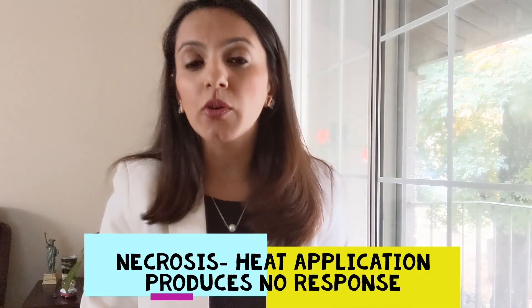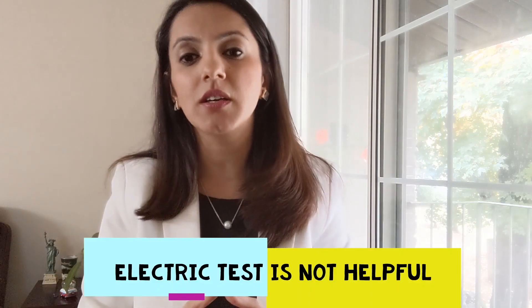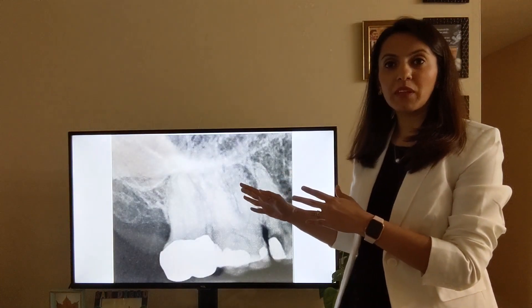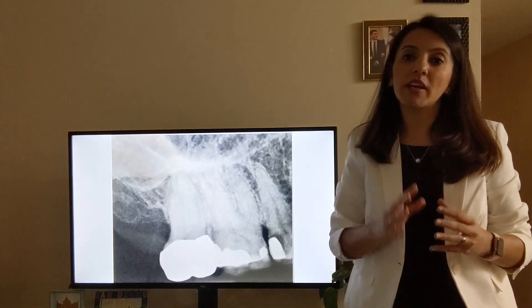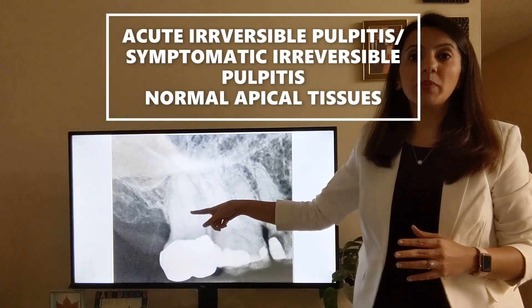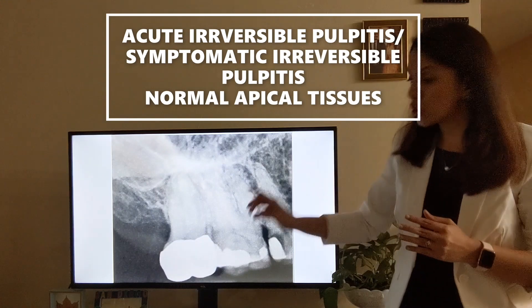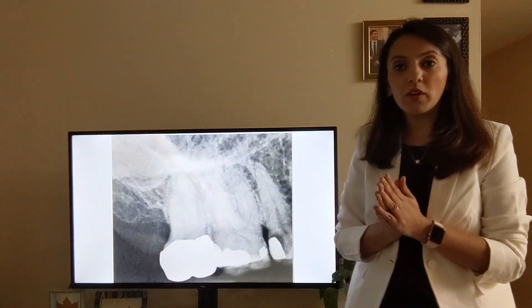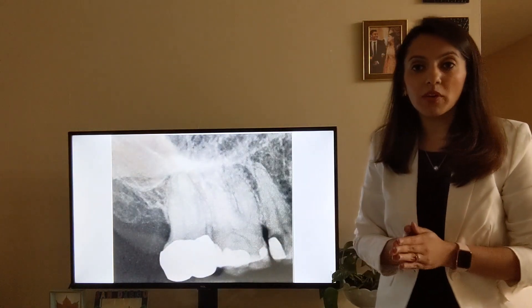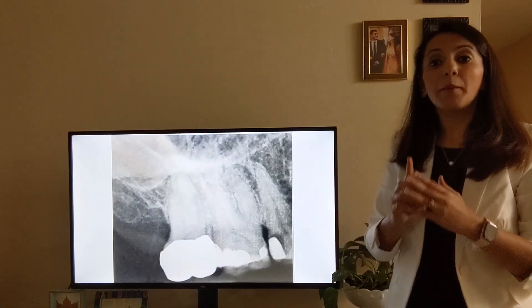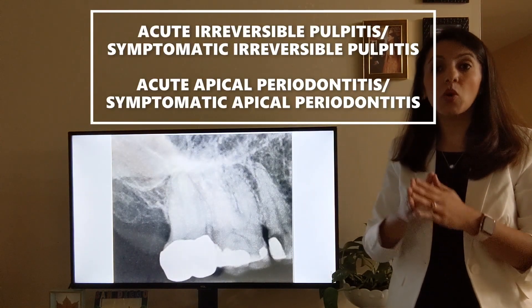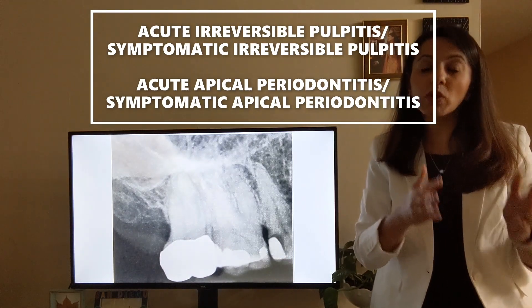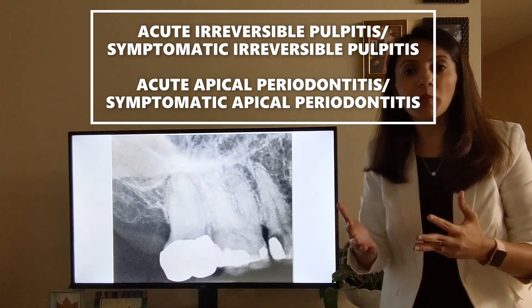Quick fact: if the tooth is necrosed, heat application produces no response. Also, in irreversible pulpitis, the electric test is not very helpful. In one case, heat intensified pain in the upper right second molar with tenderness to percussion negative — diagnosis is acute (symptomatic) irreversible pulpitis with normal apical tissues. In another case, tenderness to percussion was positive — diagnosis is symptomatic irreversible pulpitis with acute apical periodontitis, also called symptomatic apical periodontitis.